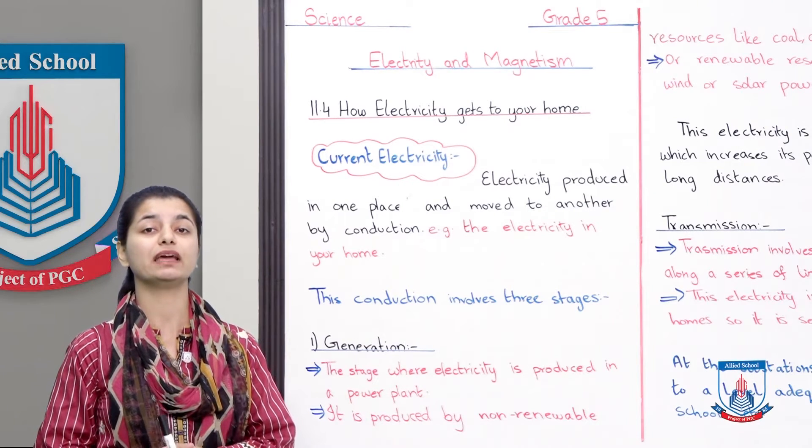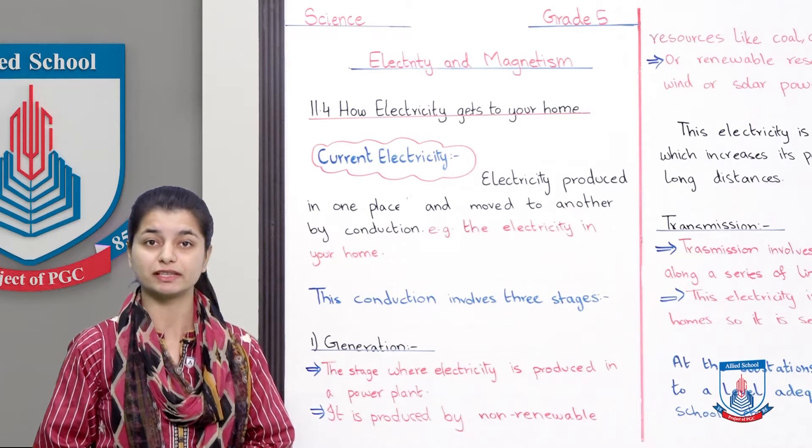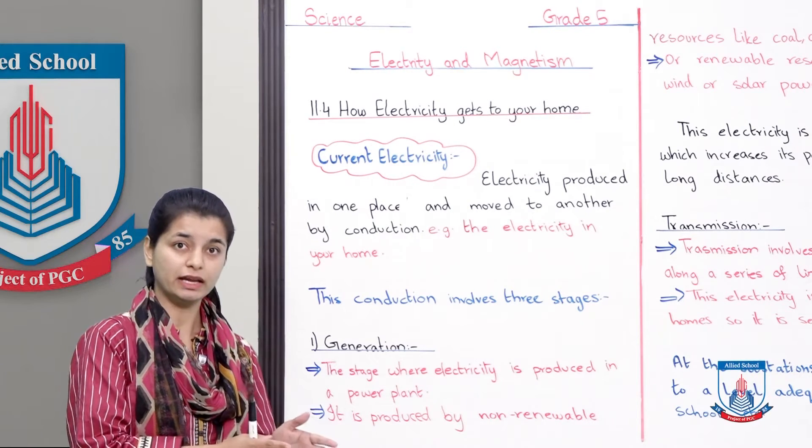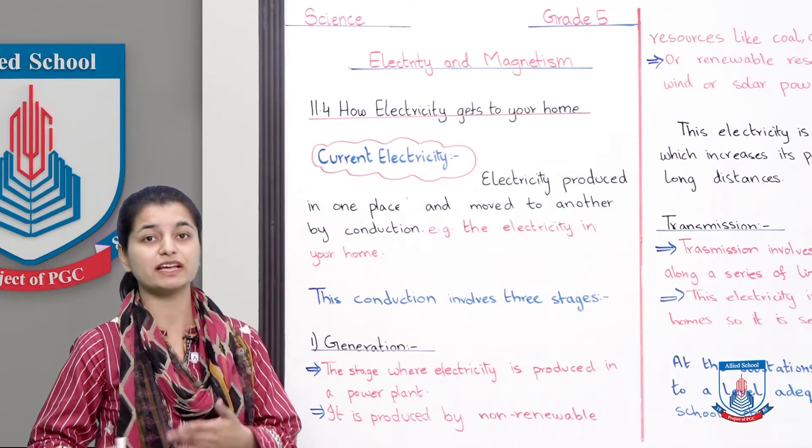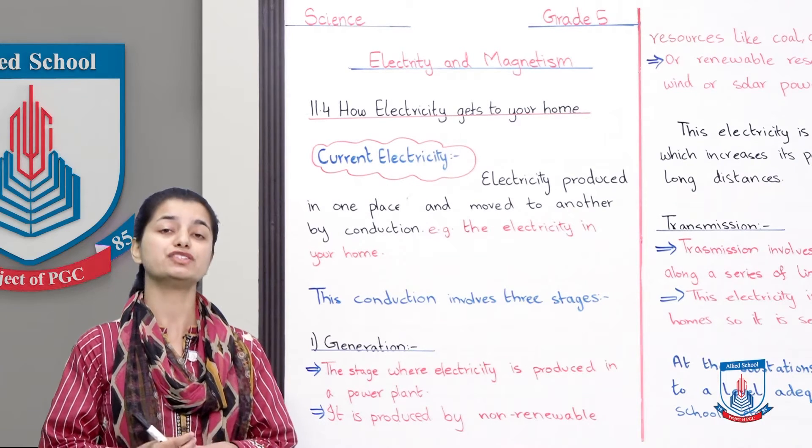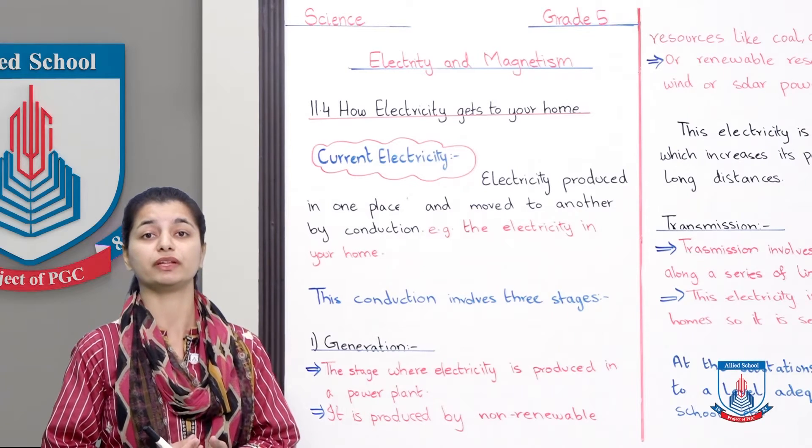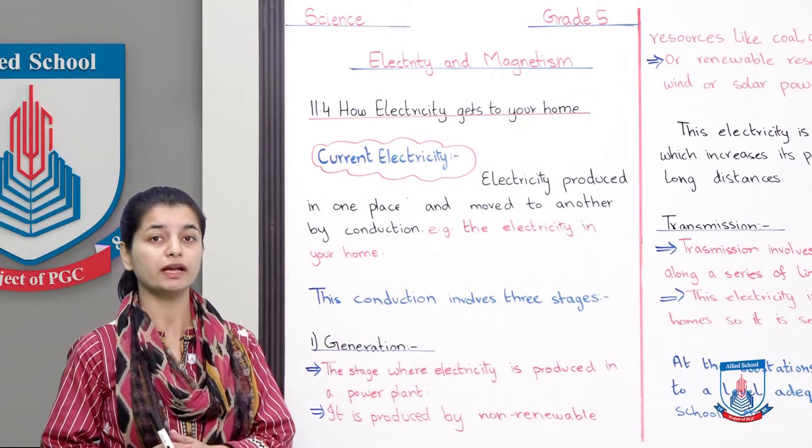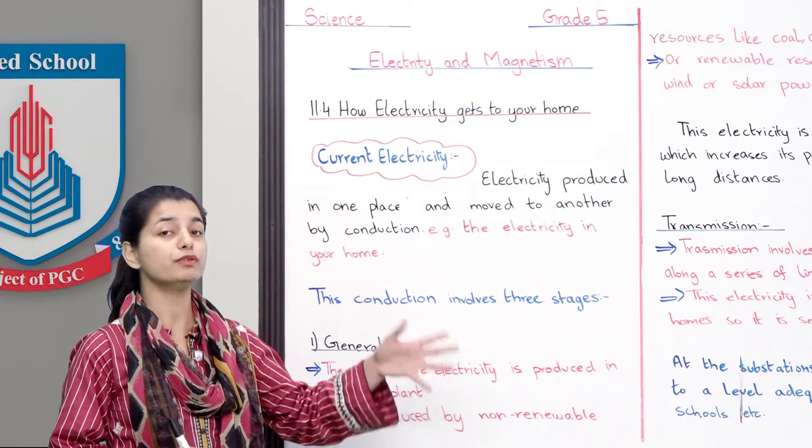We started with the definition of current electricity. Current electricity is when electricity is produced in one place but reaches somewhere far away to be used. The electricity in our homes is current electricity because it was produced somewhere else.